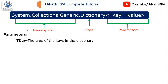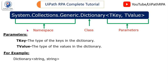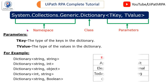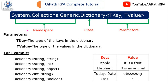TKey means the type of key in the dictionary, and TValue means the type of values in the dictionary. For example, the key can be string and value can be string. Or the key can be string and value can be integer. We can also take key as string and value as object, key as integer and value as string, or key as string and value as boolean. We have lots of data types we can use in the dictionary.